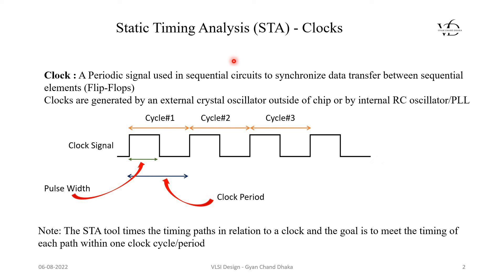What is a clock? We will start from the definition of a clock. A clock is nothing but a periodic signal which is used in sequential circuits to synchronize the data transfer between different sequential elements like flip-flops.